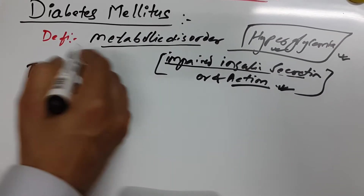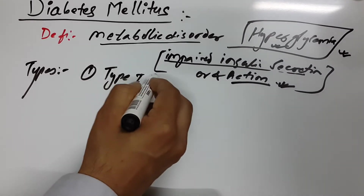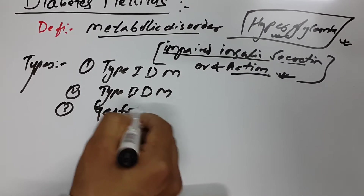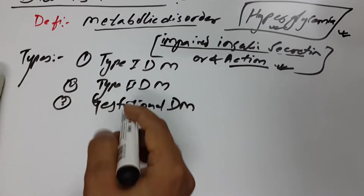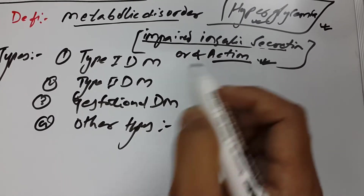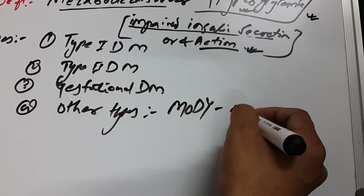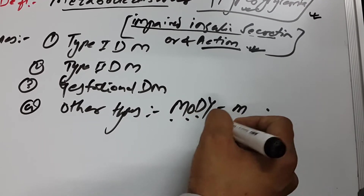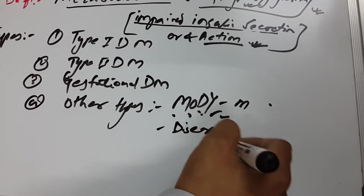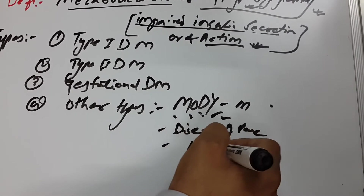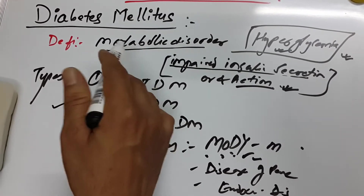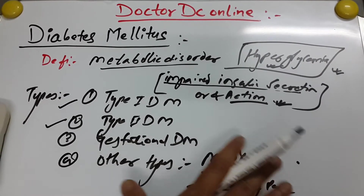The types of diabetes mellitus are: Type 1, Type 2, gestational diabetes mellitus, and other types. One common 'other type' is MODY — Maturity Onset Diabetes of the Young — as well as diseases of the pancreas and endocrine disorders. We will focus on Type 1 and Type 2 as these are the most common.